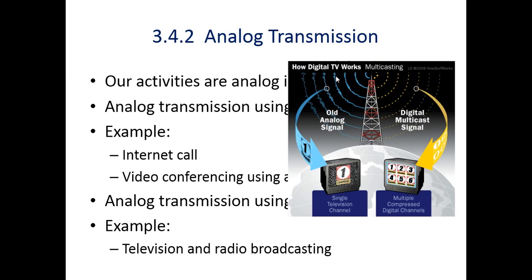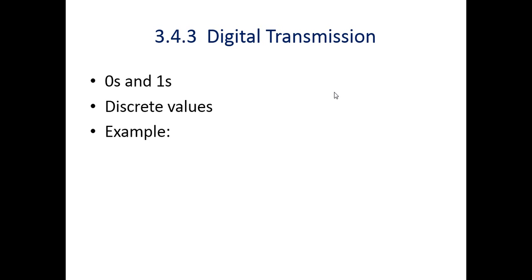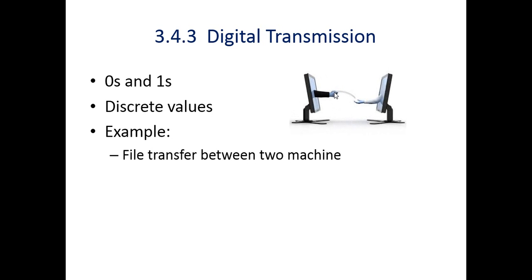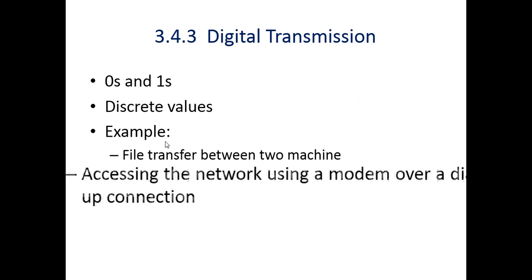Digital transmission means digital data are transmitted using digital transmission. Digital data is in the form of ones and zeros, as discussed. A file transfer from one computer to another computer — files are stored in ones and zeros and if they are transported using digital transmission, then we call it digital transmission. It has a discrete set of values. An example is file transfer between two machines.